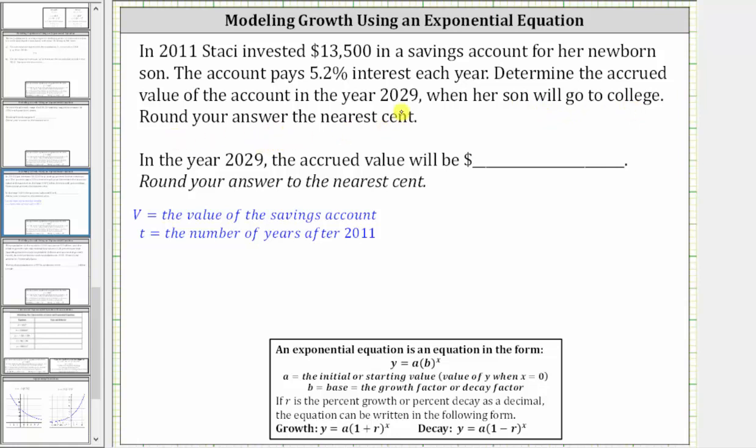Because the account is increasing by a constant percentage each year, we'll model the value of the savings account using an exponential equation in the form y equals a times b raised to the power of x, where a is the initial or starting value, and because the account increases by 5.2% each year, we have exponential growth.